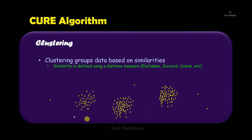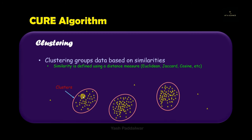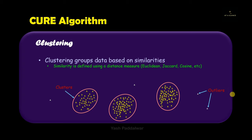Here we have some data points and we are supposed to create clusters. A cluster is a group of data points which are closer to each other and which behave similarly. You can see we have created three different clusters based on the distance between them — data points in cluster 1 are very far from every data point in cluster 2, hence they form different clusters. Some data points are not part of any cluster; those are called outliers — data points that behave abnormally compared to those inside the cluster.